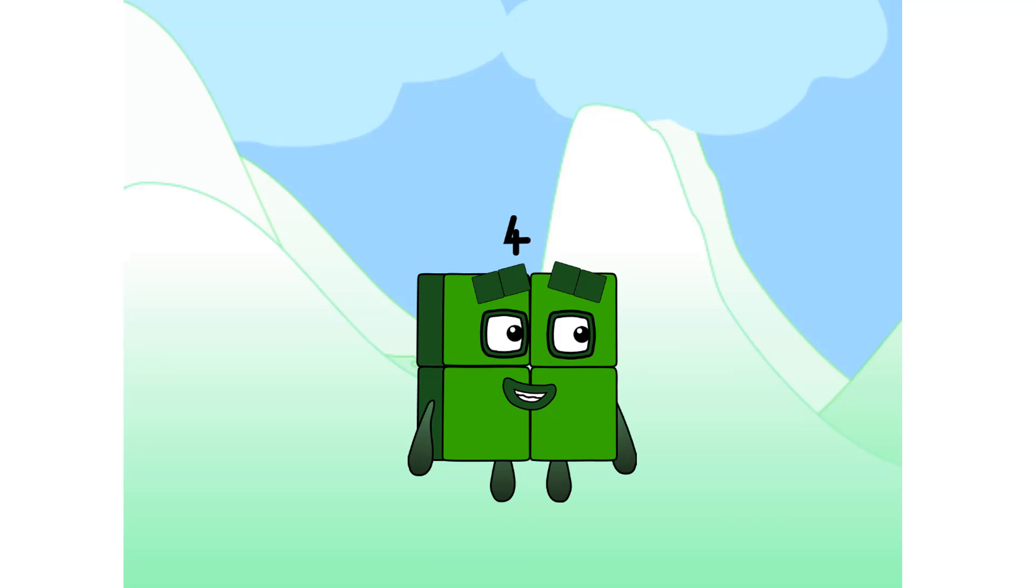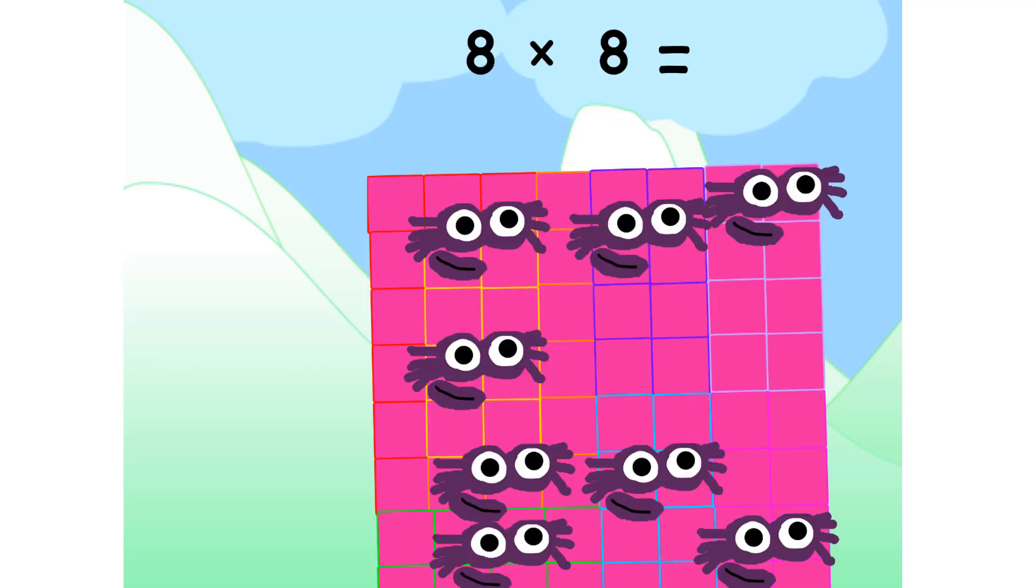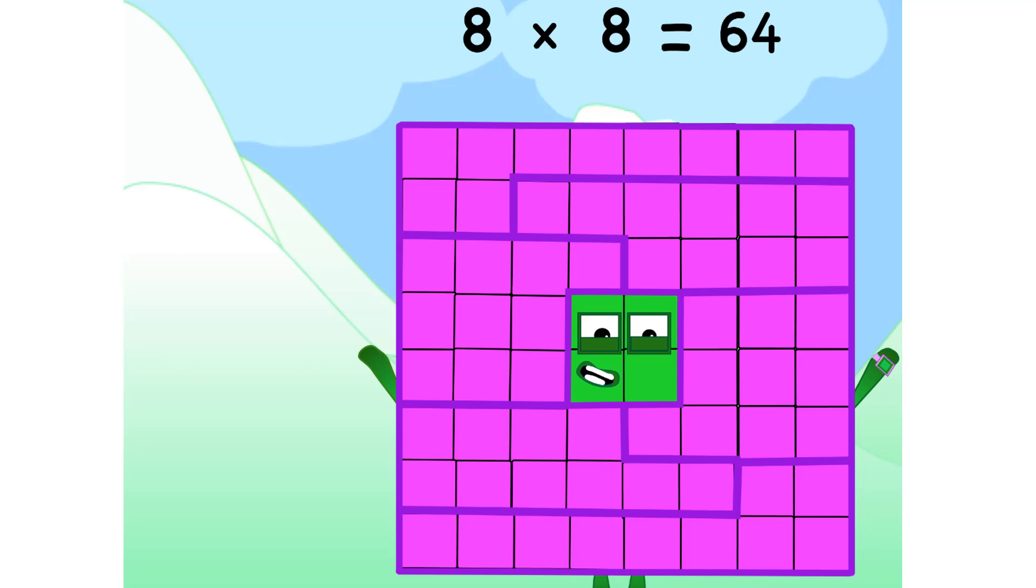Let's multiply instead. Eight times eight equals 64.